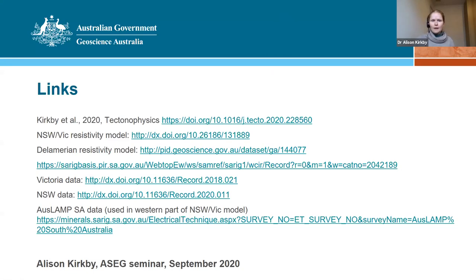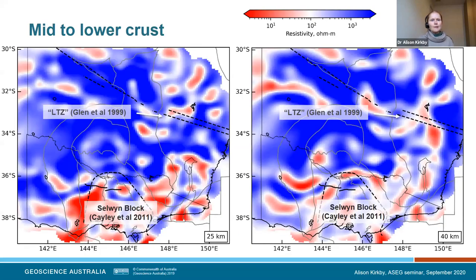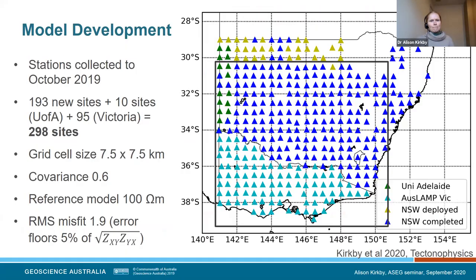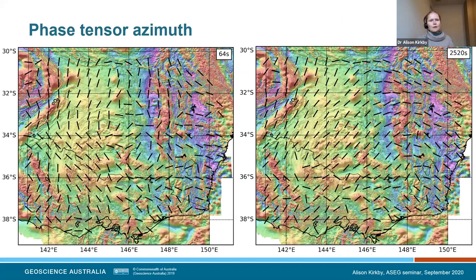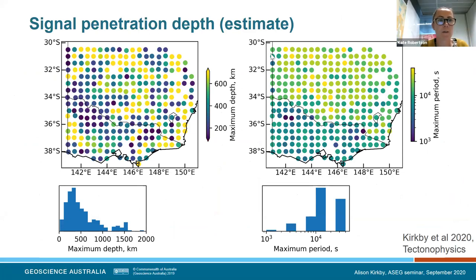Anywhere from around 100-200 kilometres up to theoretically 600-700 kilometres, but we're really looking at the upper 200-300 kilometres in the model. She also had another question: can you see correlations between conductivity anomalies with Stavely or Broken Hill mining fields?